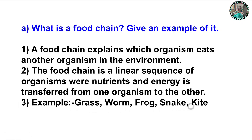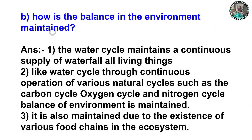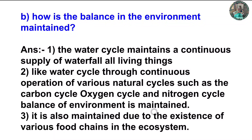How is balance in the environment maintained? The answer is: the water cycle maintains a continuous supply of water for all living things. Through continuous operation of various natural cycles such as the carbon cycle, oxygen cycle, and nitrogen cycle, the balance of the environment is maintained. It is also maintained due to the existence of various food chains in the ecosystem.